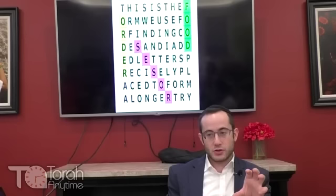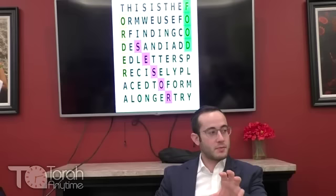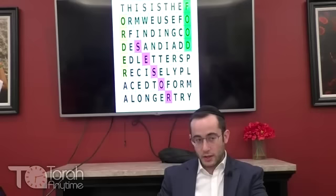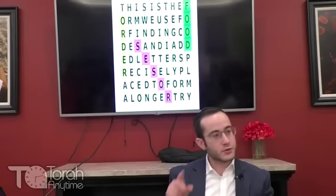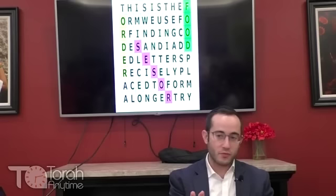For example, you write a normal letter — 'Hey mom, everything is great down here in Siberia.' But you tell them beforehand: every 10th letter, circle that letter. Forget everything else — that's where your real message is. You circle every 10th letter and you'll find your real message in there. That is the idea behind codes.